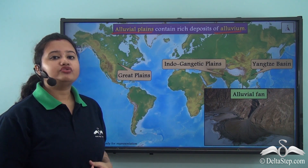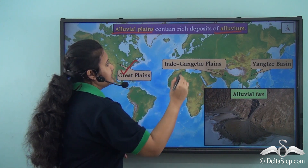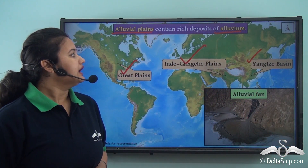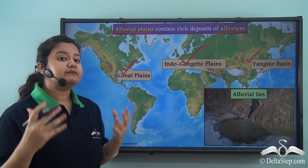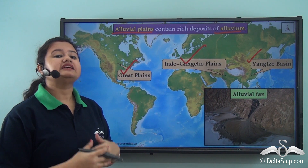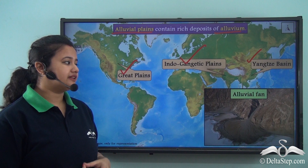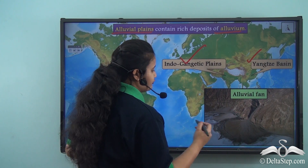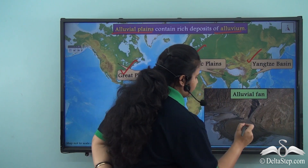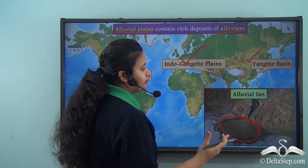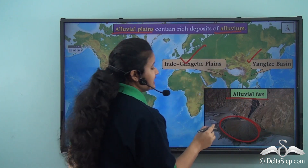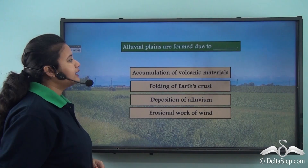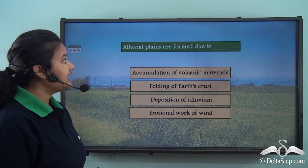The major alluvial plains of the world are the Great Plains, the Indo-Gangetic Plains, and the Xiangxi Basin of China. Alluvial plains are typically formed at the base of a mountain when a river slides down the slope and spreads in the shape of a fan, depositing alluvium. This landform is known as an alluvial fan because the sediments are deposited in a fan shape, as seen in the picture.